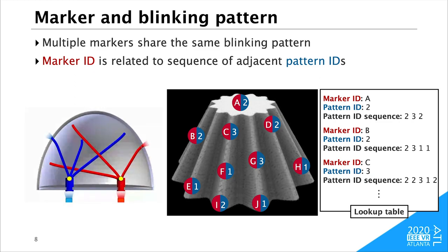In offline, we make a lookup table storing these IDs and the sequence of spatially-adjacent pattern IDs. For example, marker C emits the third pattern and is surrounded by markers emitting the patterns of 2, 2, 3, 1, 2.